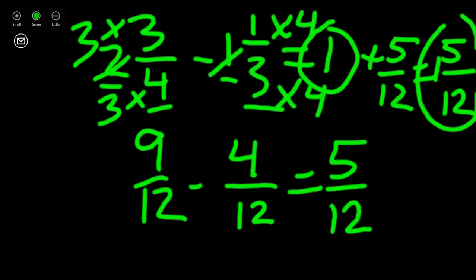We check to see that this is written in simplest form, and it is not an improper fraction. Our answer is written in simplest form, so one and five-twelfths is our final answer.